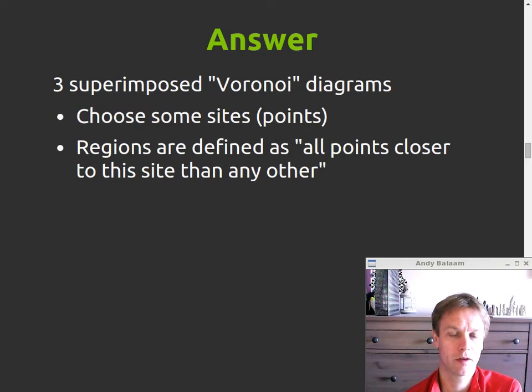So what the answer is, is it's three Voronoi diagrams, one for red, one for green and one for blue superimposed on top of each other. The Voronoi diagram is built by choosing some points within your picture and then coloring all the other points on the picture by saying, pick the point that you're closest to, pick the site that you're closest to, the sites that we've picked, the points. And all the pixels which are close to that site, or closer to that site than any other site, are all the same color.